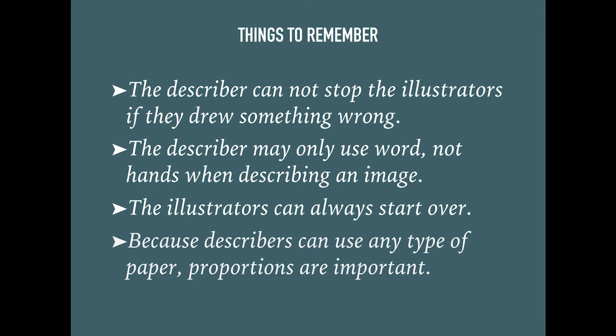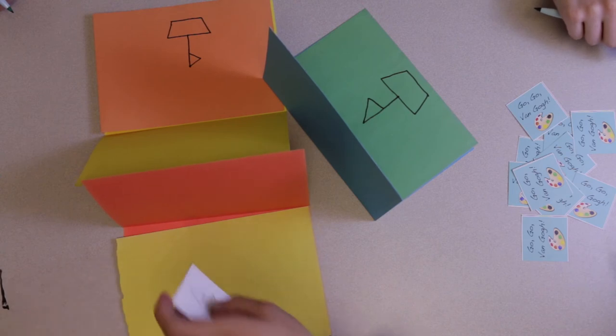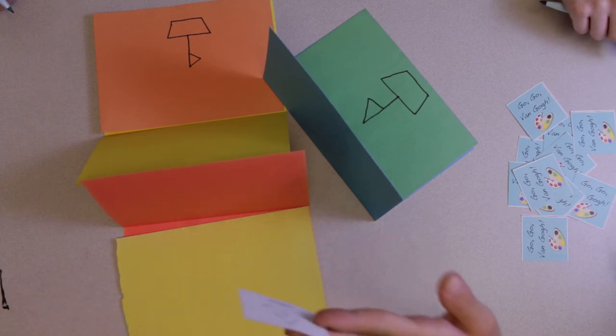It is important to remember a couple of things when playing this game. The describer cannot stop the illustrator during the game to tell them they drew something wrong. The describer cannot use their hands to describe the image. Lastly, the drawers are allowed to start over if they suspect they drew something incorrect at some point.